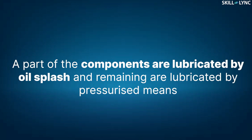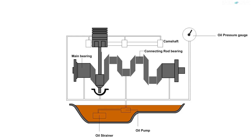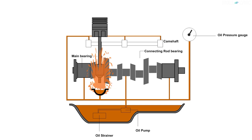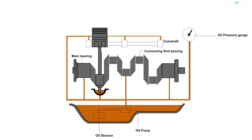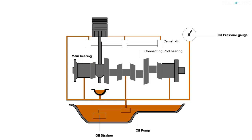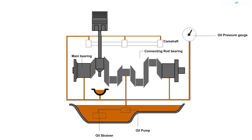Now let's move on to the semi-pressure lubrication system. As the name suggests, a part of the components are lubricated by oil splash and the remaining are lubricated by pressurized means. The oil from the sump is filtered by the strainer and pumped by an oil pump. The oil is directly pumped into the lines for lubricating the main and camshaft bearings, while the remaining parts are lubricated by oil splash or by nozzles. The system also has an oil pressure gauge which indicates whether the oil supply is sufficient or not.